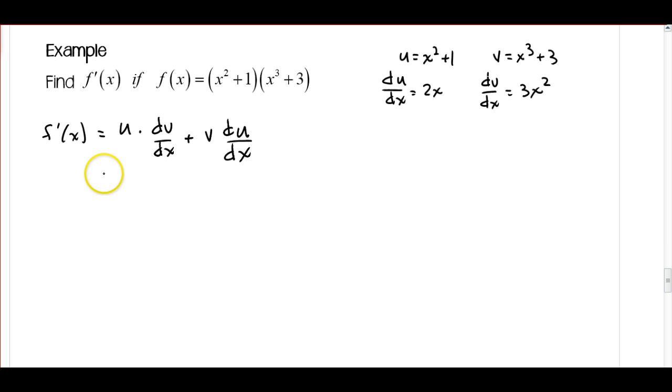All right, and I've got all my parts up here, so I'm just going to substitute those in. So u is going to be x squared plus 1, dv/dx, that's my derivative of v with respect to x, so that's going to be times 3x squared, plus my function v, which is x cubed plus 3, times du/dx, du/dx is 2x, times 2x.